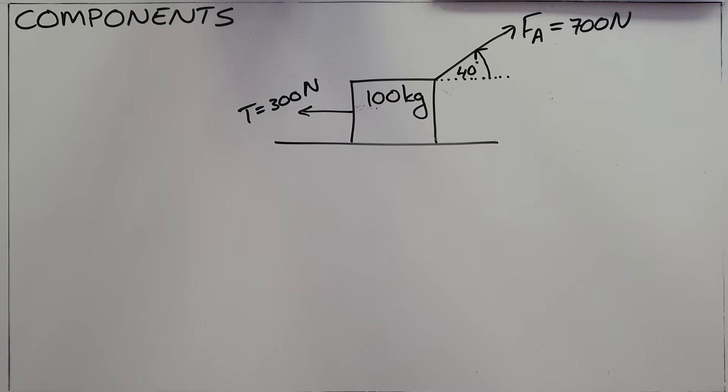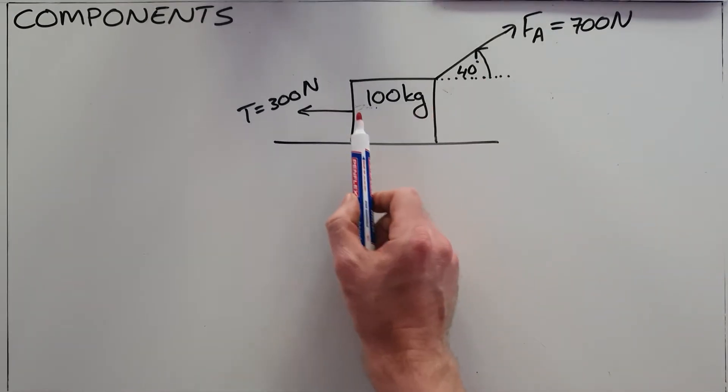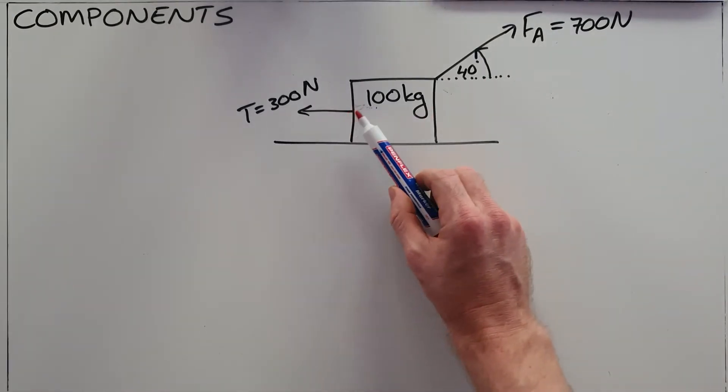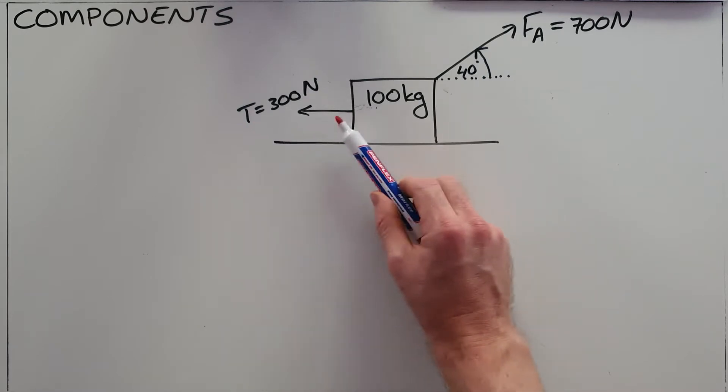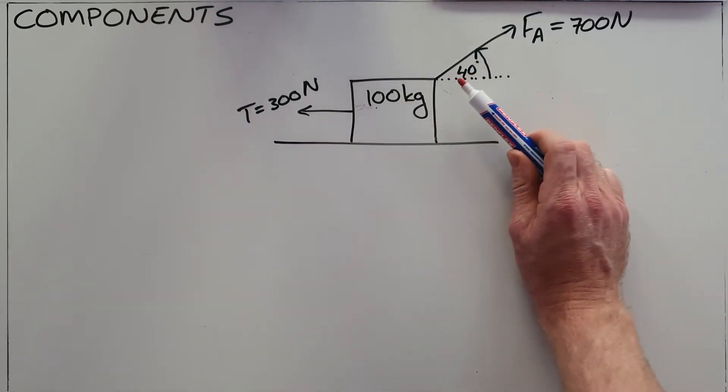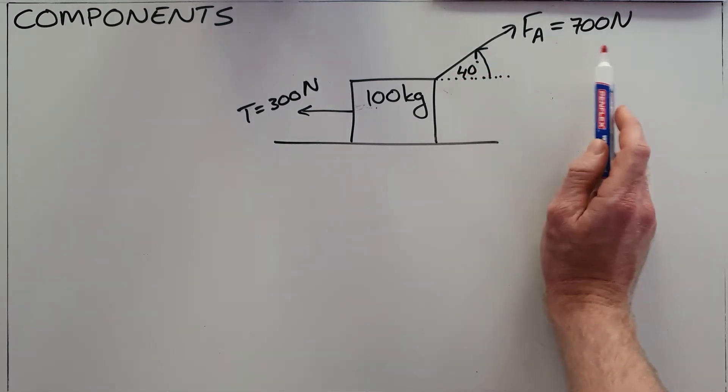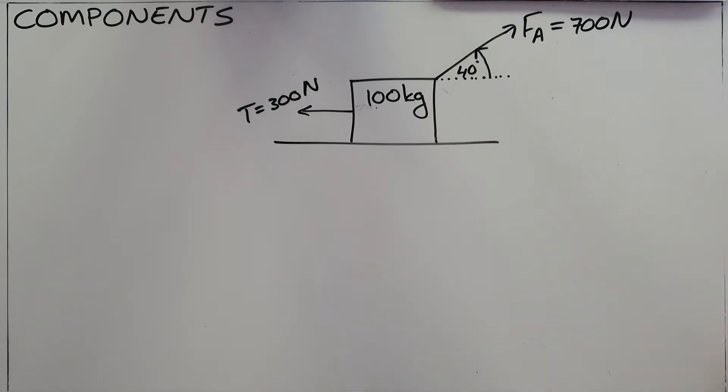What's far more realistic is forces that act at various angles to each other, as we've got in this example over here. We've got a 100kg object that is being pulled or attempting to be pulled with a 300N force to the left, and then an applied force that is being applied at an angle of 40 degrees to the horizontal with a value or magnitude of 700N.